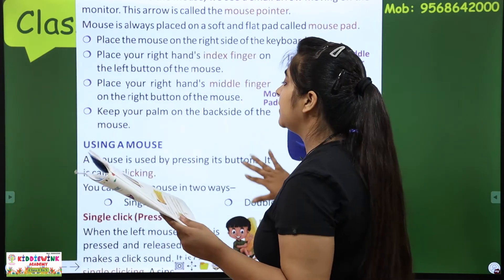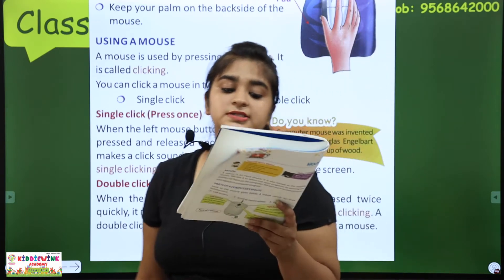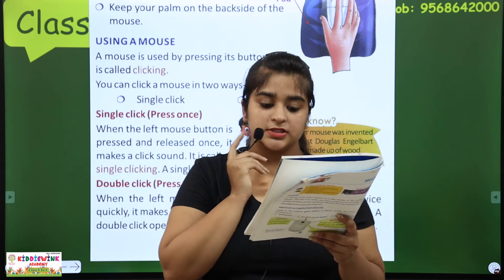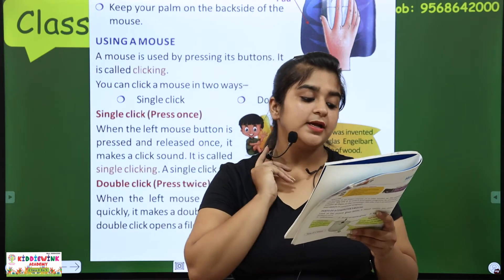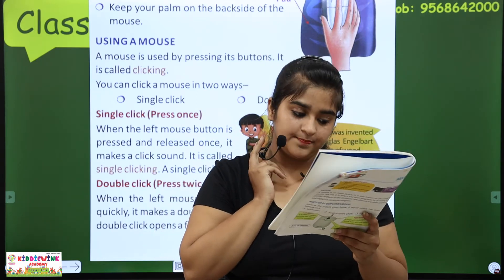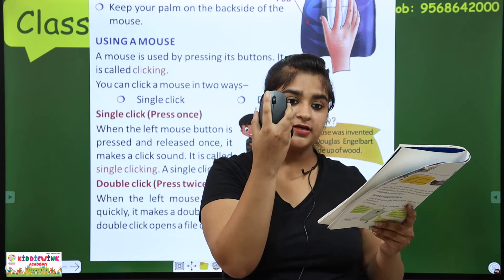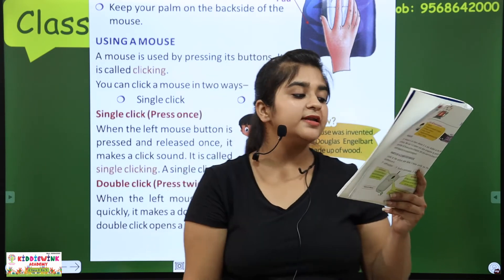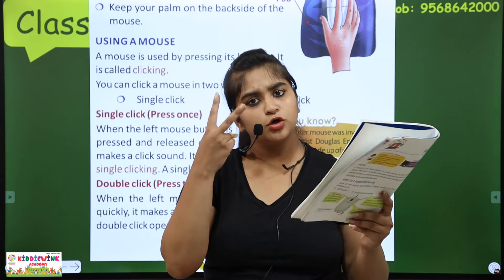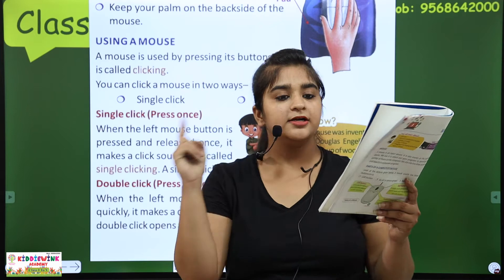Now: using a mouse — mouse ko use kaise karte hai. A mouse is used by pressing its buttons. Mouse ko uske buttons ko press karke use kiya jata hai. It is called clicking — usi ko clicking kehte hai. You can click a mouse in two ways: single click and double click.